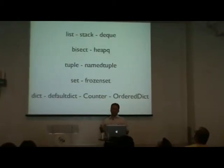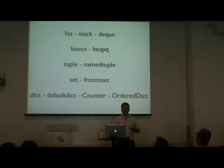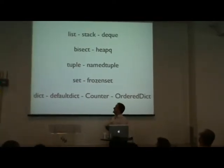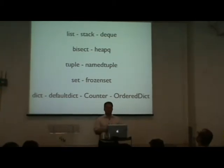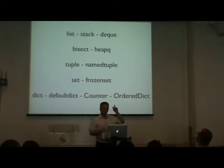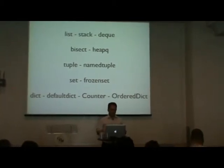When I started, Python pretty much had lists, dictionaries, and tuples, and those were basically the data structures. Those are pretty much the same data collection objects we use now, but since then, mostly due to Raymond Hettinger, we've added quite a few other collection types that I want to talk about.